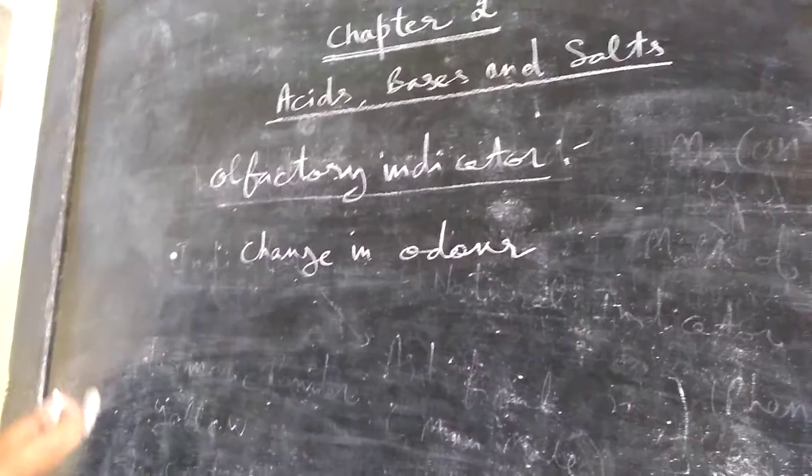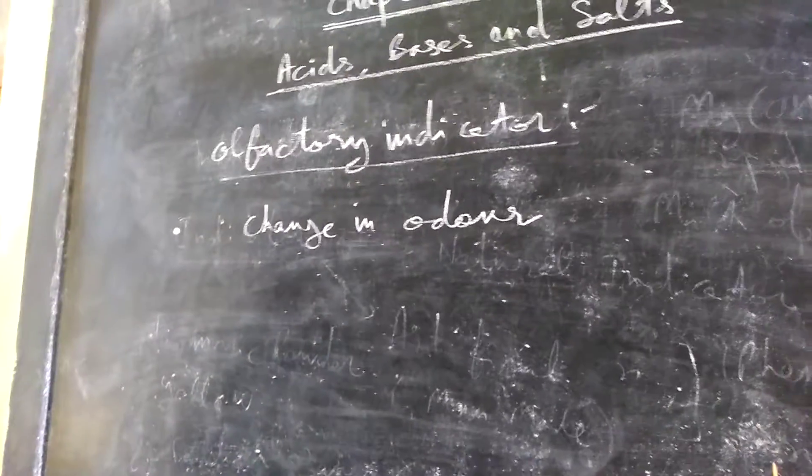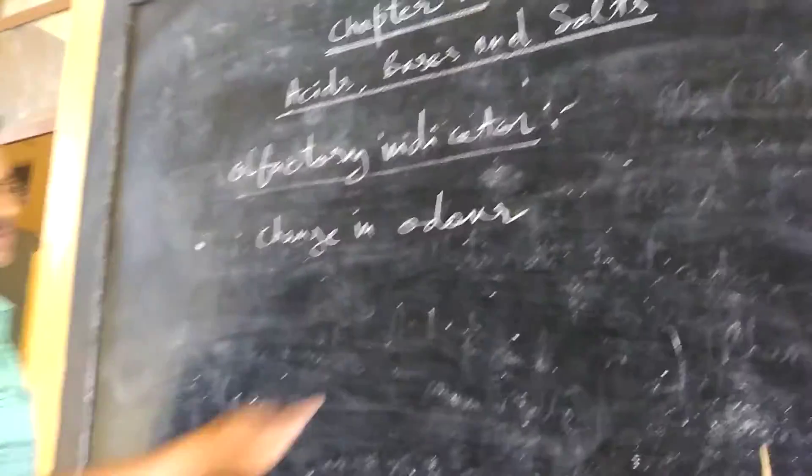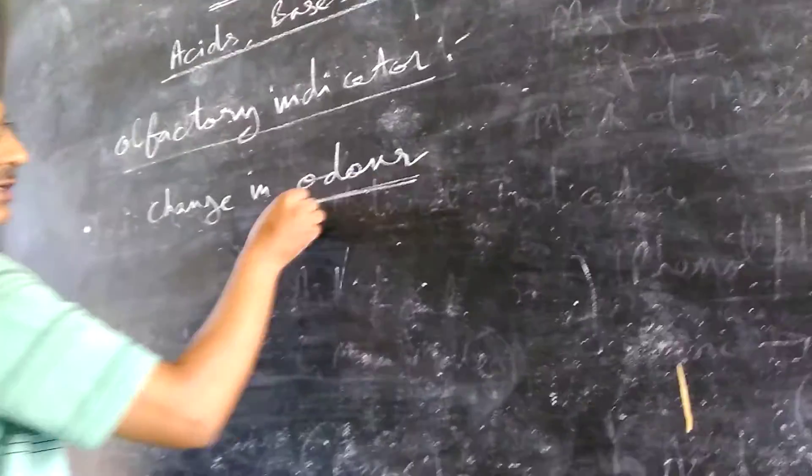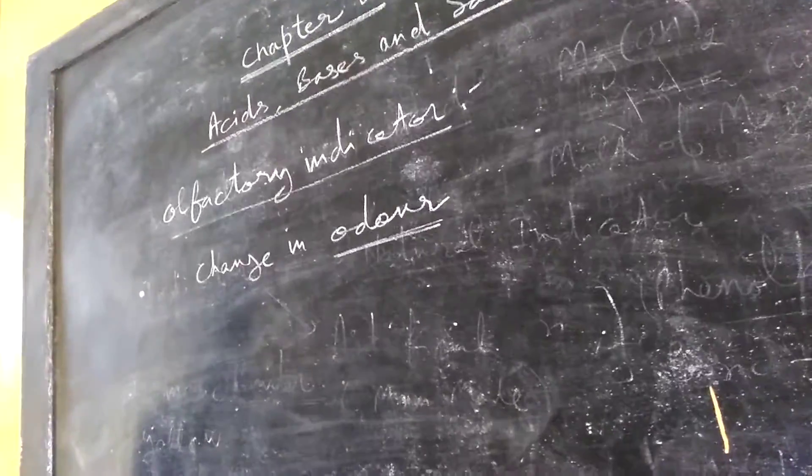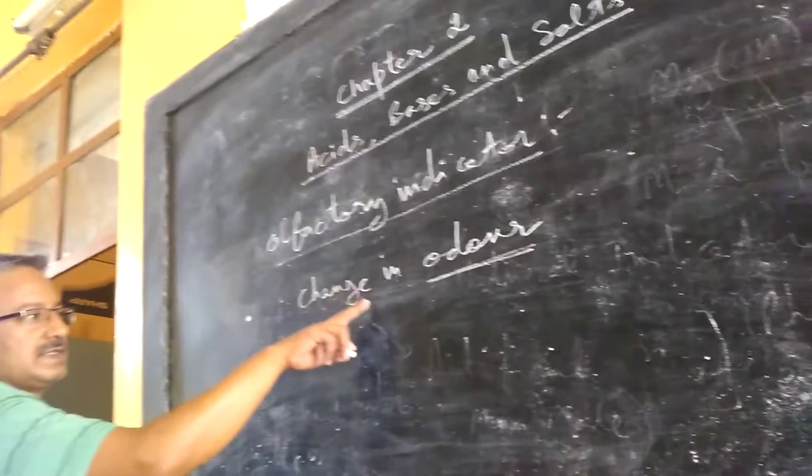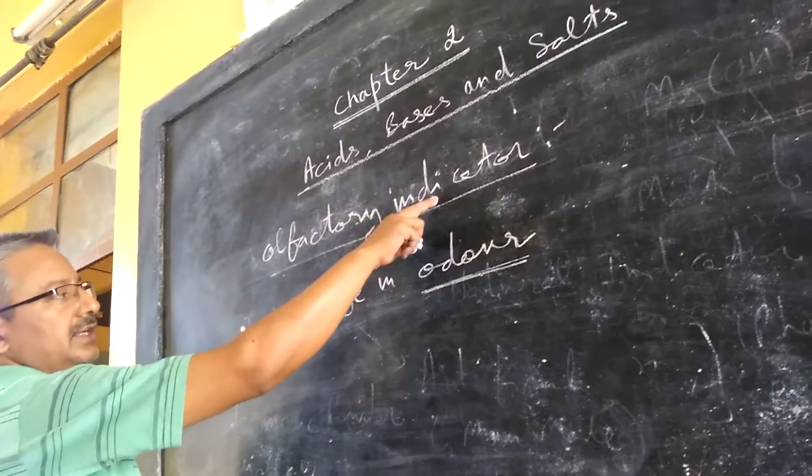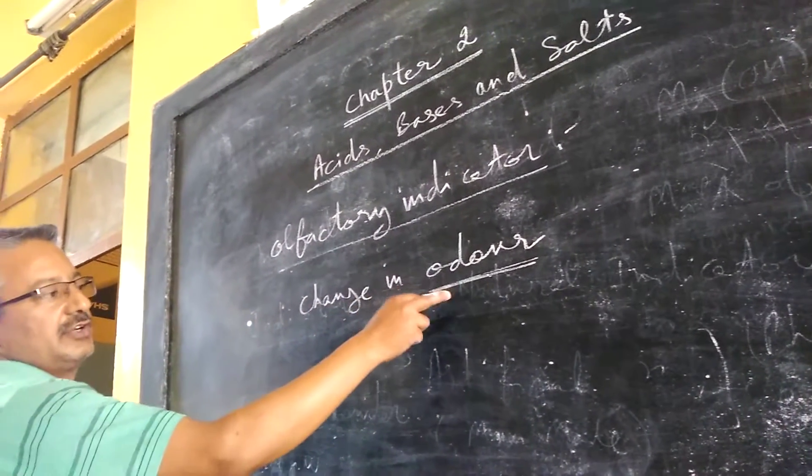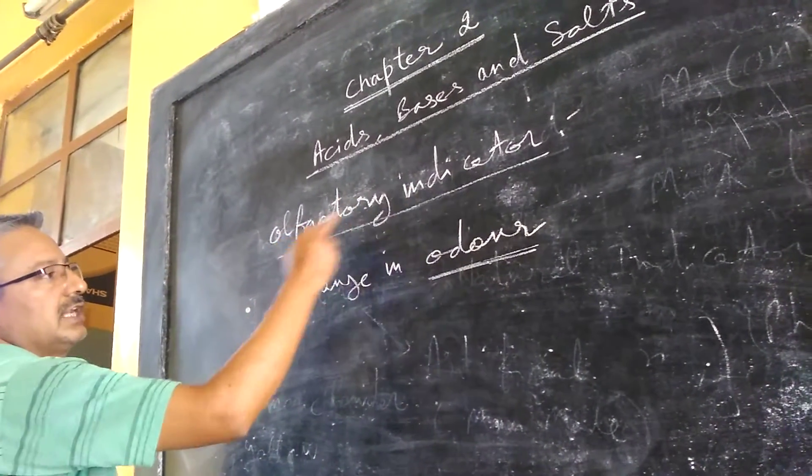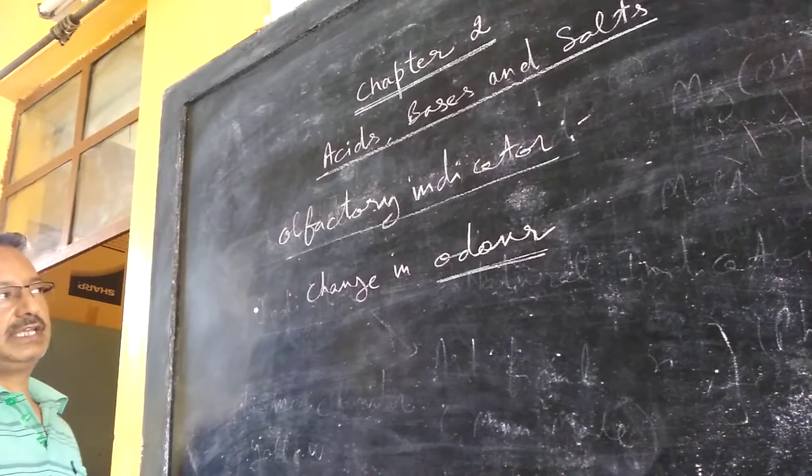If we are taking these things in acidic medium, then we may smell another odor. And if we are taking it in basic medium, then we can again smell different odor. So in acidic and basic medium, if a substance, if an indicator gives different odors, then that indicator can be termed as olfactory indicator.